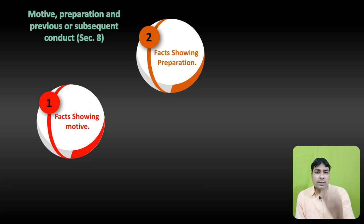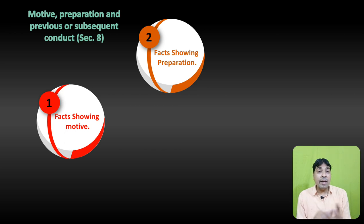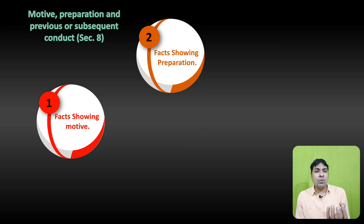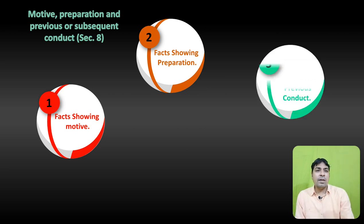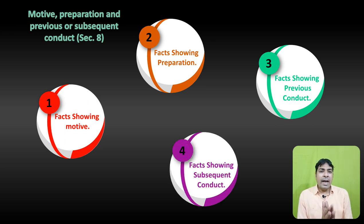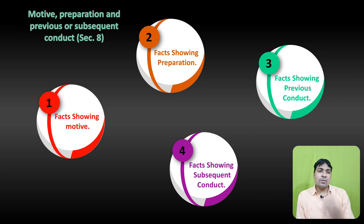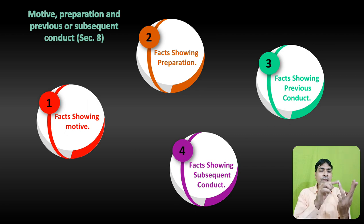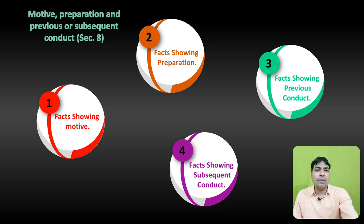The first one is fact showing motive — aisi fact jo motive ko show karti hai, Section 8 mein relevant hai. Fact showing preparation — aisi fact jo preparation ko show karti hai, ki offence ke liye yeh preparation hui hai, that becomes relevant. Facts showing previous conduct — pahle ka koi conduct agar fact batata hai, that also becomes relevant. And fact showing subsequent conduct — baad ka koi conduct agar accused ka hai, that is also relevant. So, chaar cheezein hain — fact showing motive, preparation, previous conduct and subsequent conduct — all become relevant under Section 8.